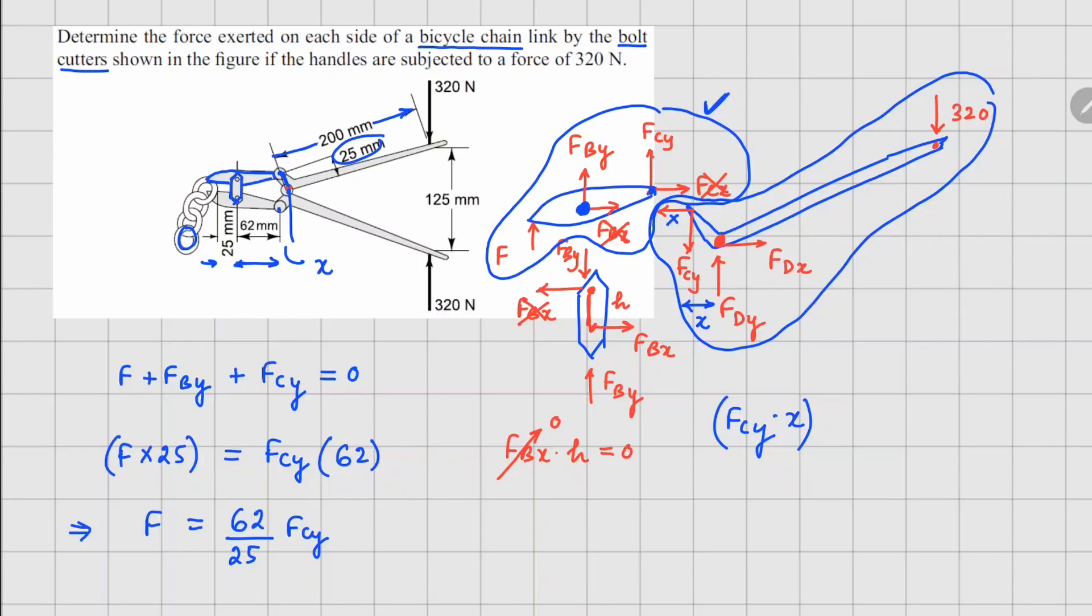FCy times x, and this is going to give you a counterclockwise moment, is going to be equal to this 320 times this horizontal distance from here to here. Let's call this as x1, so 320 times x1.